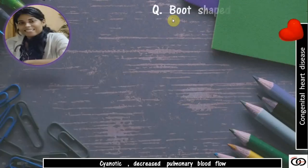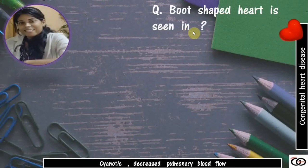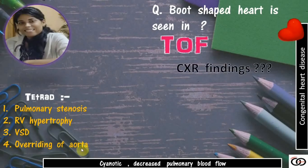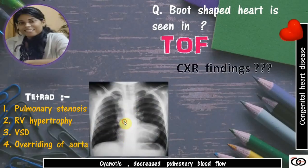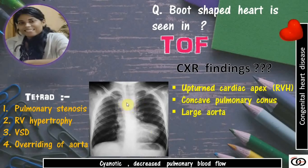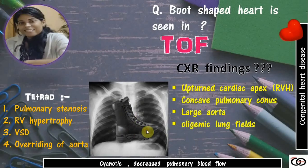Boot-shaped heart is seen in TOF, tetralogy of Fallot. The tetrad includes pulmonary stenosis — the main culprit — which leads to right ventricular hypertrophy, ventricular septal defect, and overriding of the aorta. On chest X-ray, appreciate the upturned cardiac apex due to right ventricular hypertrophy. Then look for the concave pulmonary conus, as the main pulmonary artery is very small due to reduced flow from pulmonary stenosis. The third feature is a large aorta due to shunting of blood away from the pulmonary system. The fourth feature is oligemic lung fields as less blood goes to the lungs. This appearance is known as the boot-shaped heart or coeur en sabot.